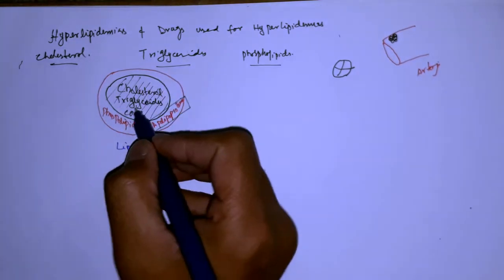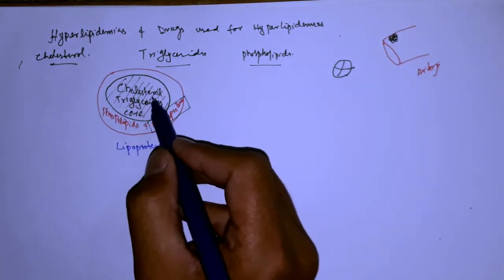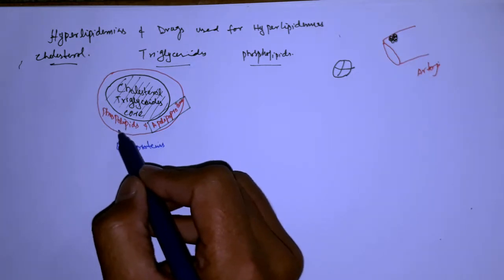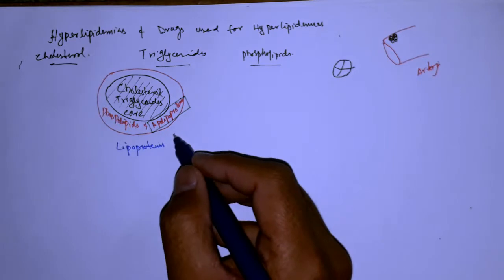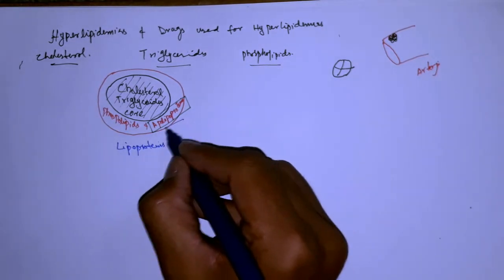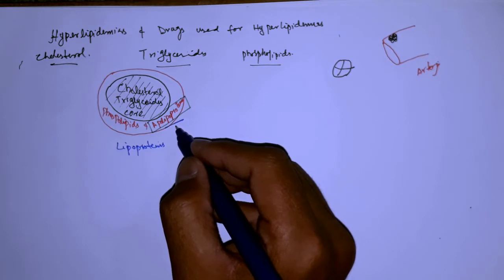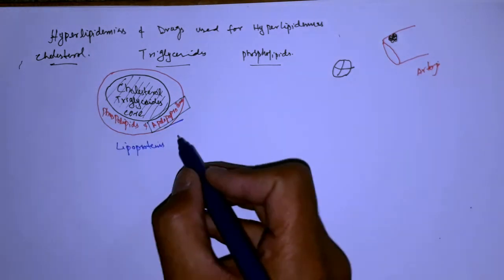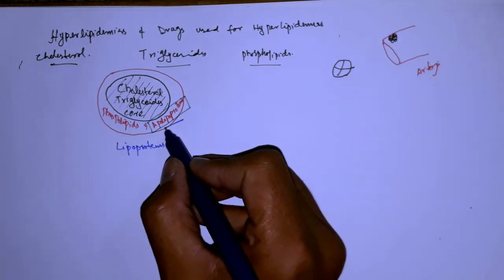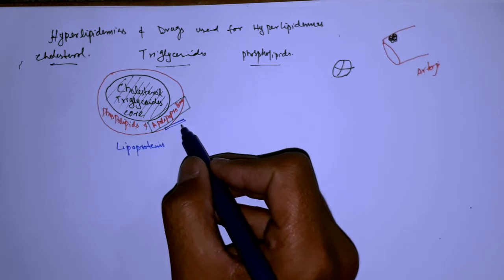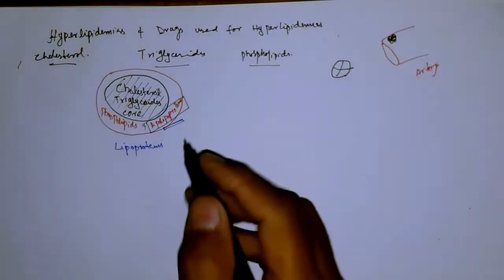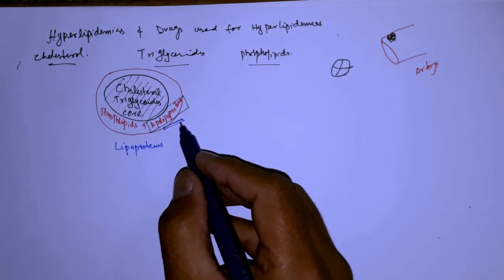A lipoprotein has a hydrophobic core made up of cholesterol and triglycerides, and a hydrophilic outer coat composed of phospholipids and apolipoprotein. Apolipoprotein is a specialized protein that can control enzymes involved in lipoprotein metabolism and serves as a ligand for lipoprotein receptors. A ligand is a binding site in the cell which a chemical will bind to a specific receptor and produce an intracellular response.